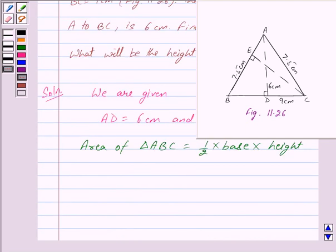Here we have BC as base and AD as height. So area of triangle ABC equals 1/2 times BC times AD.